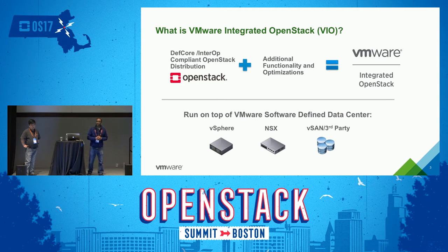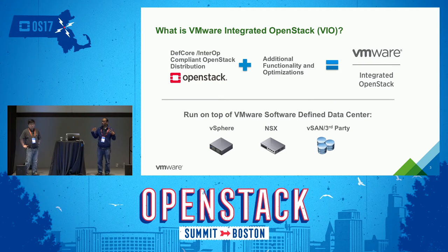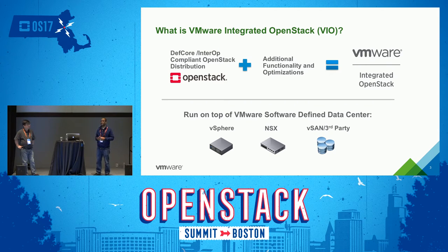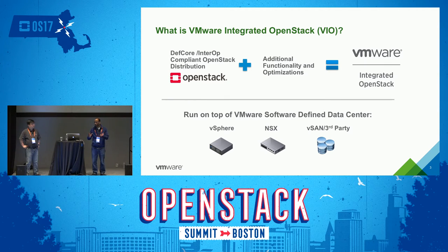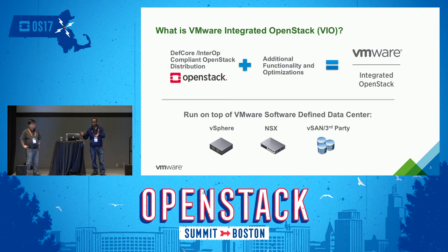So what is VMware's OpenStack? We call it VIO — VMware Integrated OpenStack. The first thing I want to clarify is that it is actually a standard OpenStack distribution. There is no specialized version that is somehow deviant from traditional OpenStack in any fashion. We are compliant with the latest Interop 2017 standards — it is a fully compliant version of the OpenStack distribution.